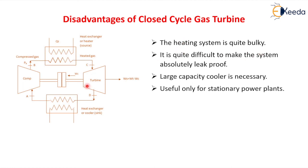Now let's see some disadvantages of closed cycle gas turbine power plant. The heating and cooling system is quite bulky. It is difficult to make the system absolutely leak proof — since the closed cycle works at high pressure, there is a chance of leakage somewhere. A large capacity cooler is necessary. The closed cycle is useful only for stationary power plants and is not useful for marine applications.